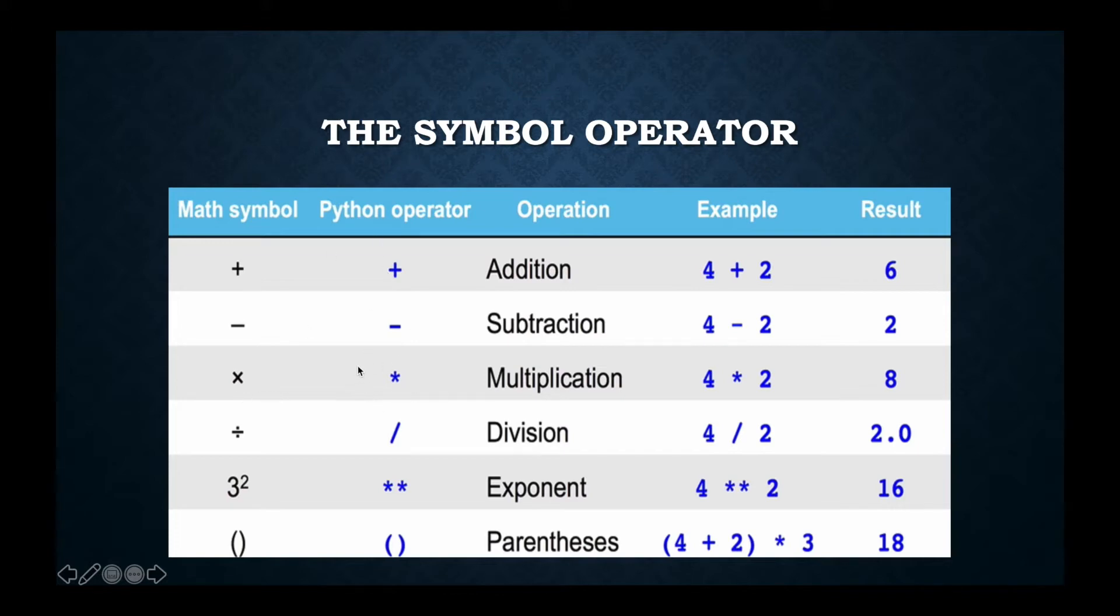For division, in math we use the division sign, but in Python we use the backslash sign. For exponent, in math we use 3 to the power of 2, and in Python we use star star. For parenthesis, we use the same parenthesis.